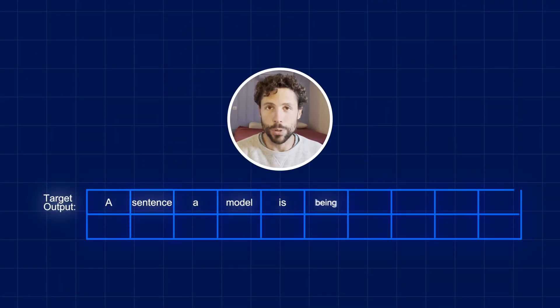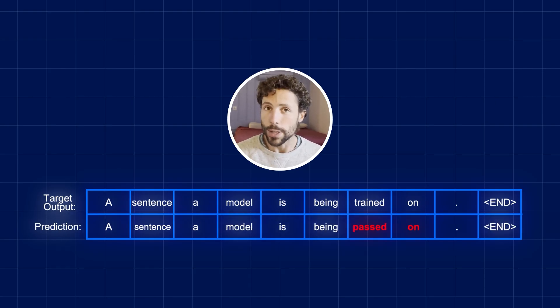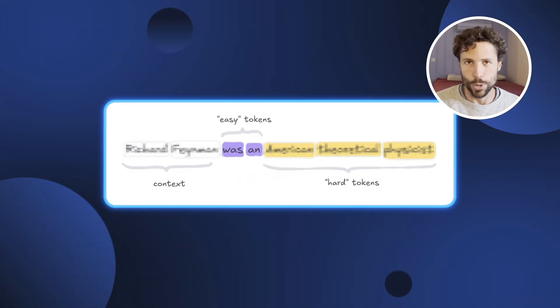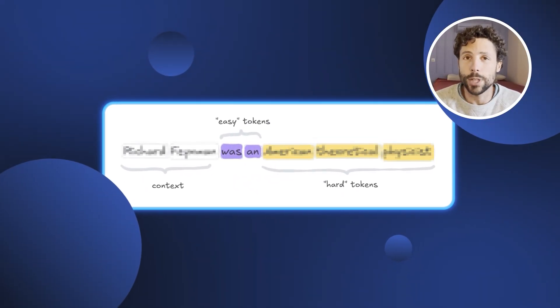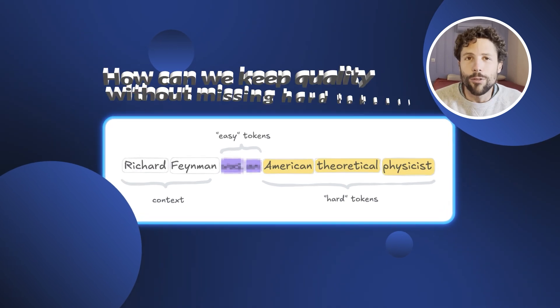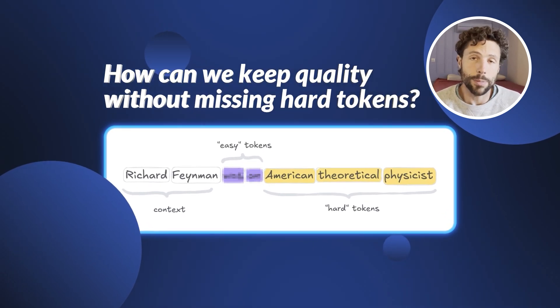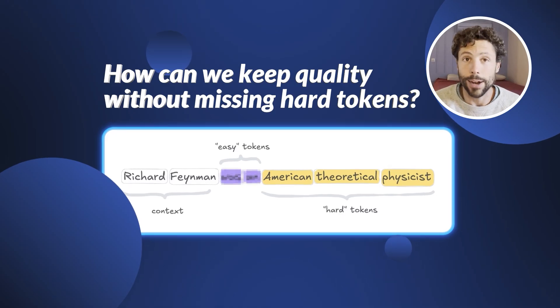Normally we need one call per generated token — the exact same amount of compute is distributed equally between all tokens in a sequence. However, this counters the intuition that some tokens, or words, should be easier to predict than others. The easy tokens should also be successfully predicted by a much smaller, and therefore cheaper, model. But the obvious question is how to preserve the quality of the original model while at the same time not failing at predicting the harder tokens.